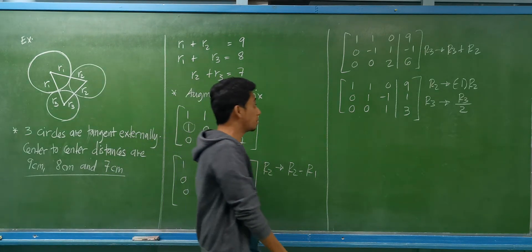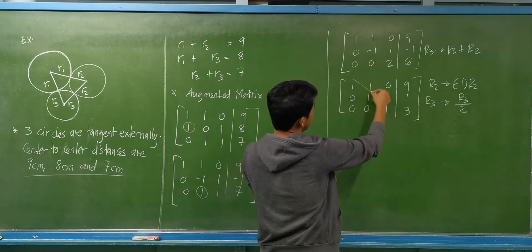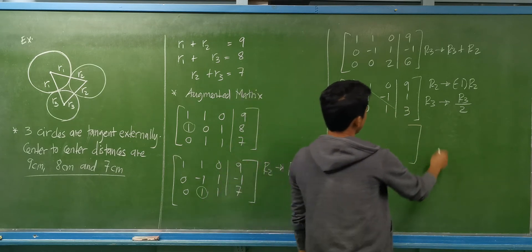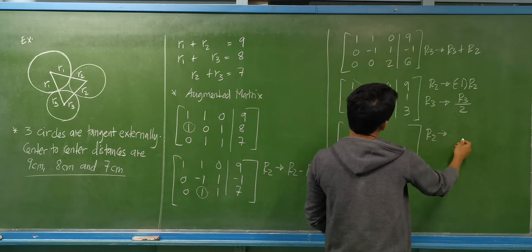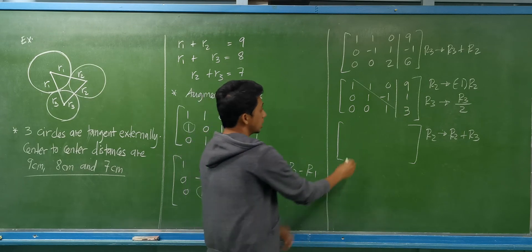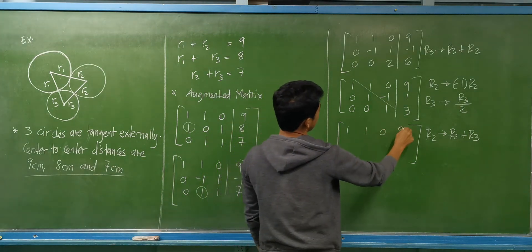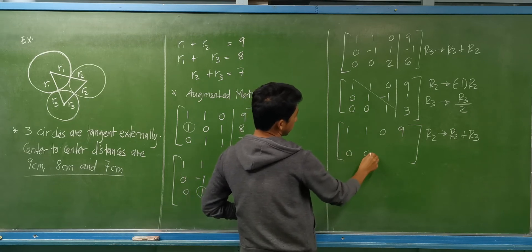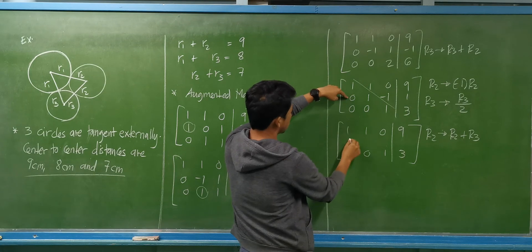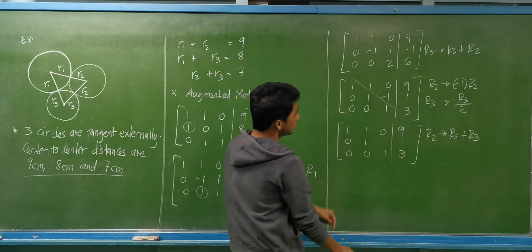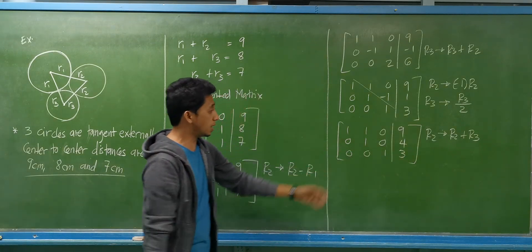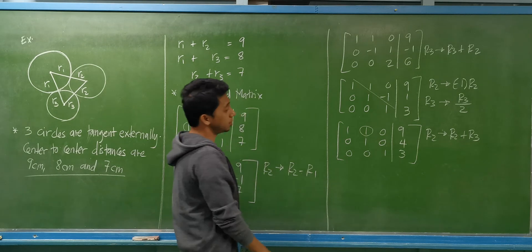To continue with Gauss-Jordan elimination, we eliminate elements above the diagonal. Row 1 remains: 1, 1, 0, 9. Row 3 remains: 0, 0, 1, 3. Row 2 becomes row 2 plus row 3: 0 plus 0 is 0; 1 plus 0 is 1; negative 1 plus 1 is 0; and 1 plus 3 is 4. The last element to eliminate is the 1 in row 1, column 2.